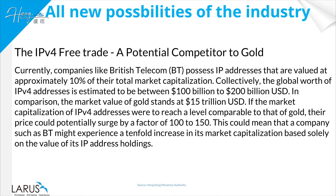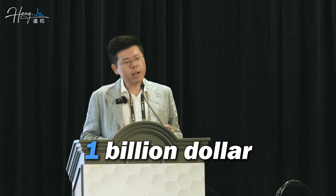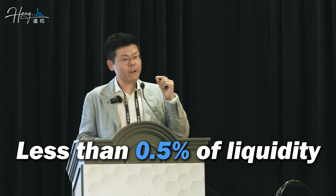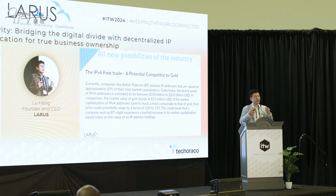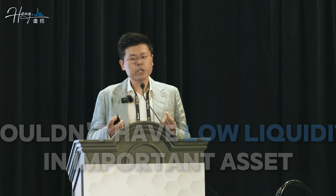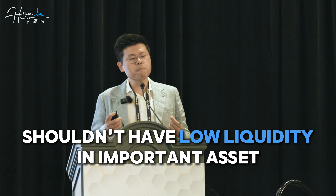Lastly, I'm going to talk about something really interesting in terms of free trade. Today, the collective market capitalization of IP addresses is valued at around $100 to $200 billion. And the trading volume of IP addresses today is only $1 billion a year — that is less than 0.5% liquidity on an annual basis. That is absurd. Any commodity, from food to energy, the liquidity of an asset on a daily basis should be at least 1%. We should have billions of dollars in transactions on a daily basis. We should not have such low liquidity for such an important asset.